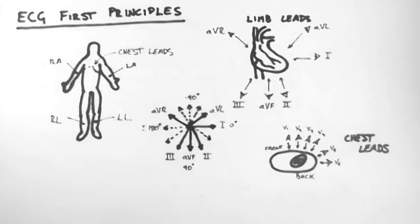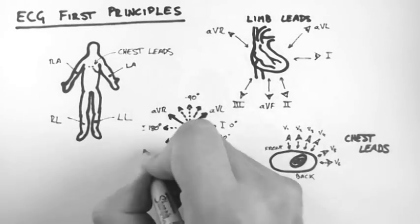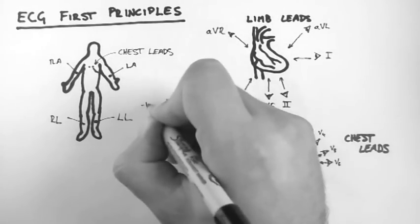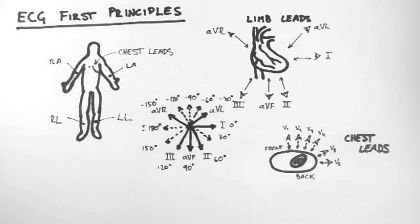Now would be a good time to talk about what I mean by looking at the heart. The ECG can't see the heart in the way an x-ray can. It sees it electrically. That is to say, it sees whether there is electrical depolarisation or repolarisation occurring in the direction of each lead.